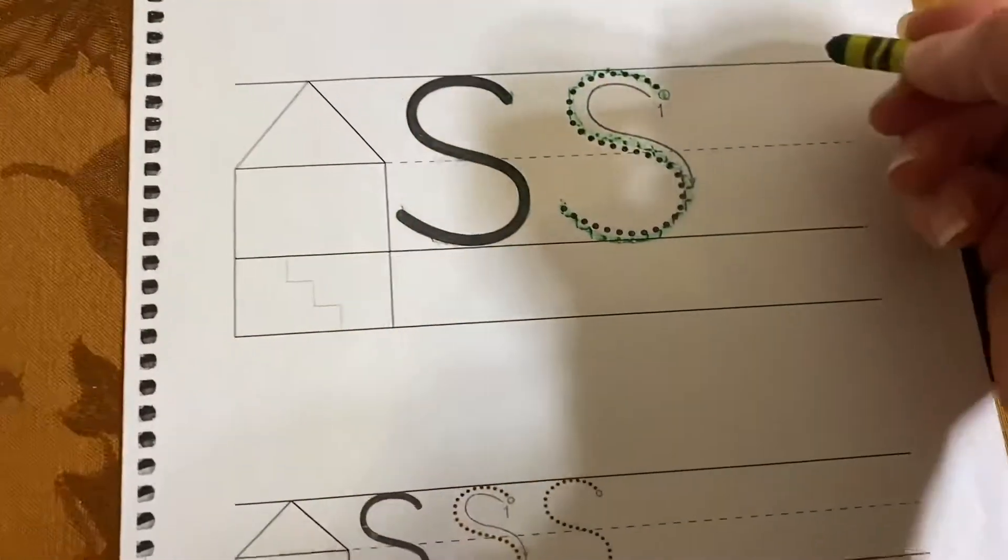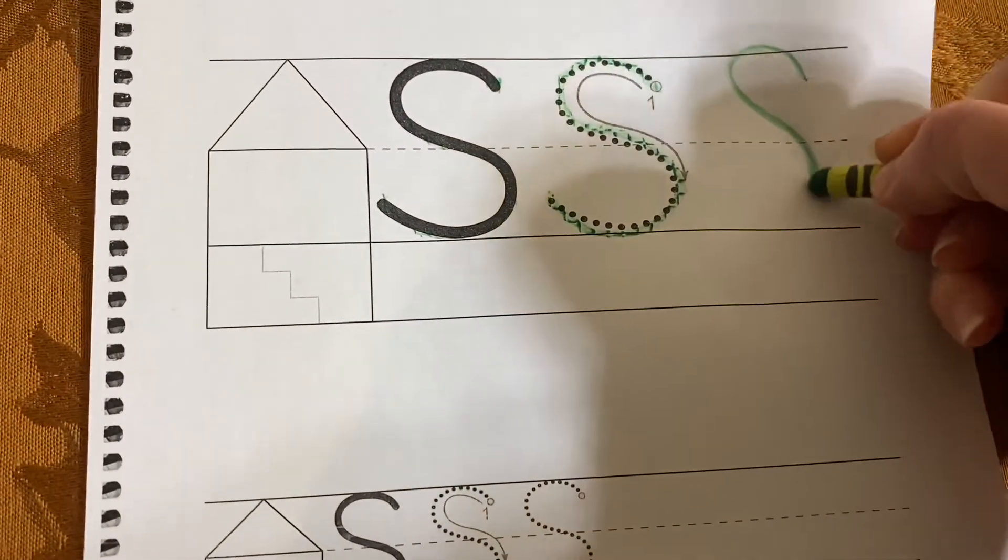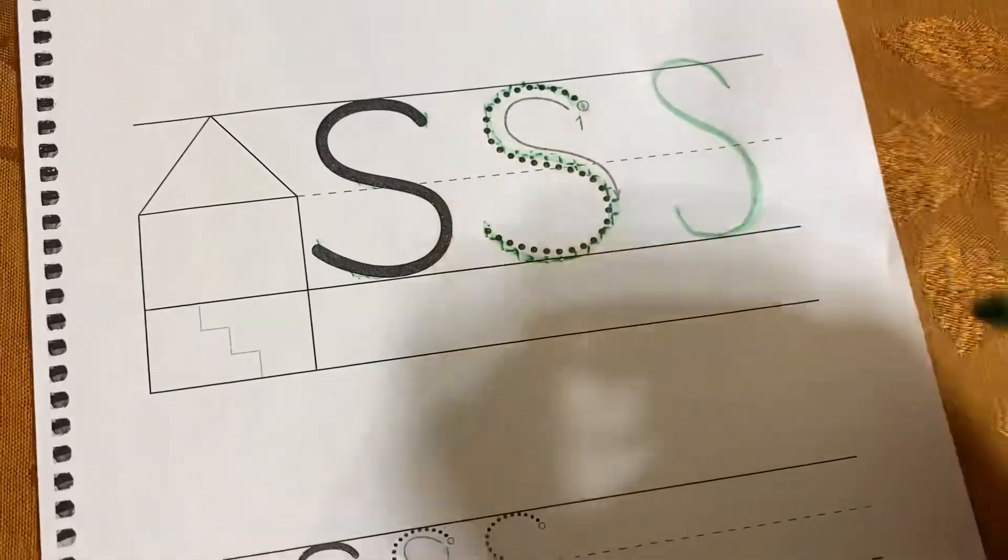Now you can take your bumpy screen out and let's make a nice smooth uppercase S. Oh boy, that one wasn't such a great job.